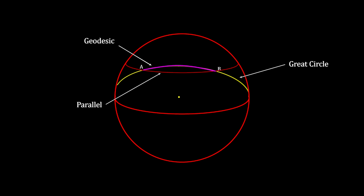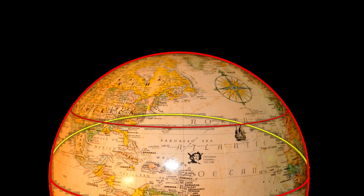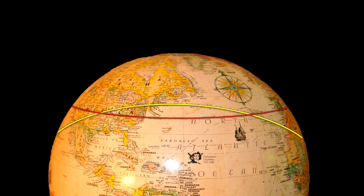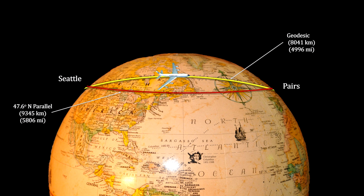A parallel of latitude line between the two points would be longer. This is why planes in the northern hemisphere travel north and then back south to get to a destination at the same latitude, rather than travel due west or due east. They have chosen the shortest distance between the two points to save on both time and fuel. Some geodesic routes can save up to a thousand kilometers.